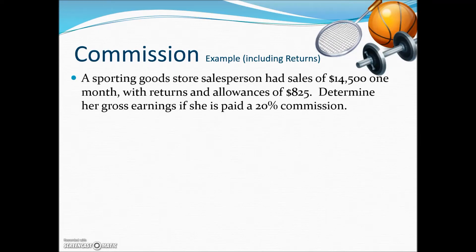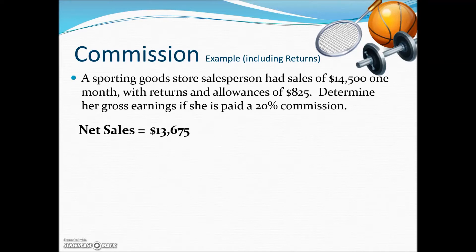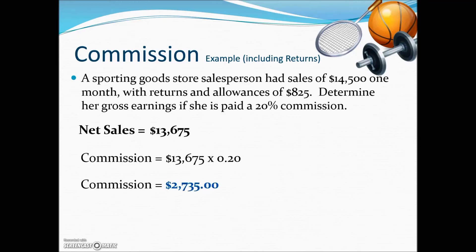In this next example, a sporting goods store salesperson had sales of $14,500 one month with returns and allowances of $825. We need to determine her gross earnings if she's paid a 20% commission. Before the commission is calculated, any returns or allowances must be subtracted from sales. Net sales equal gross sales less the $825, giving actual credited sales of $13,675. Multiplying net sales by the commission rate gives gross earnings of $2,735 for the month.